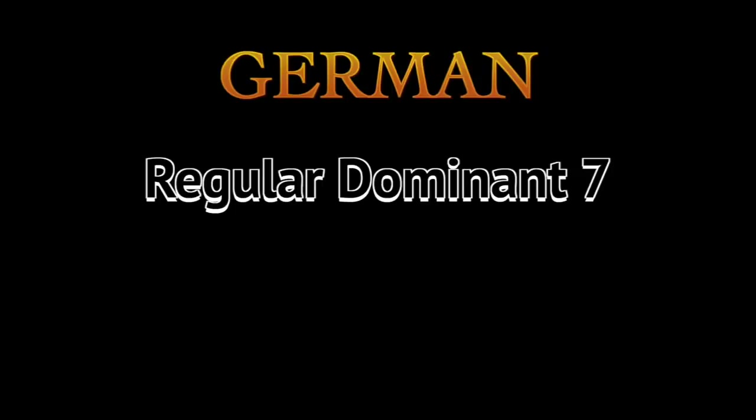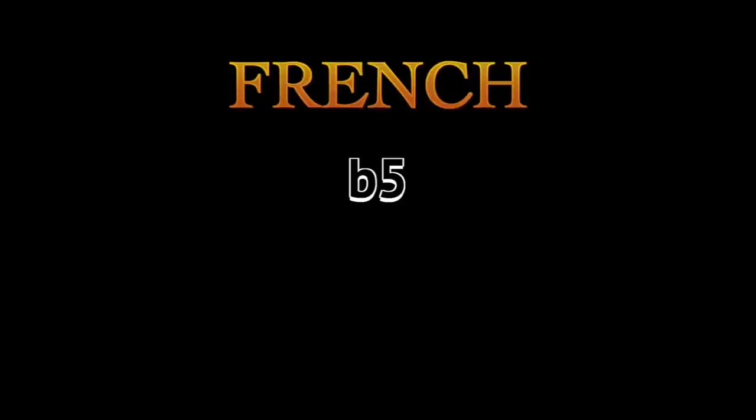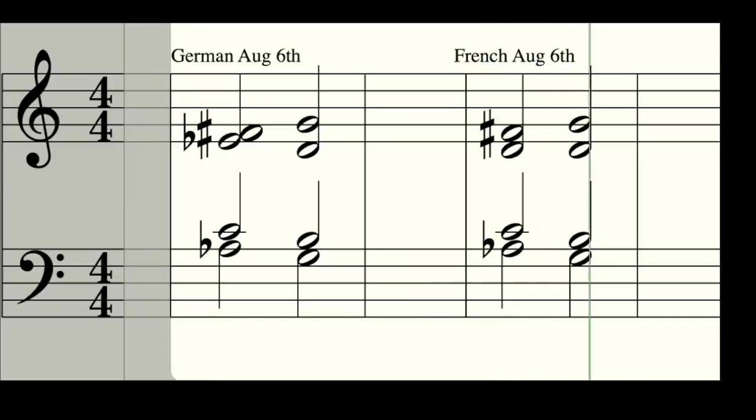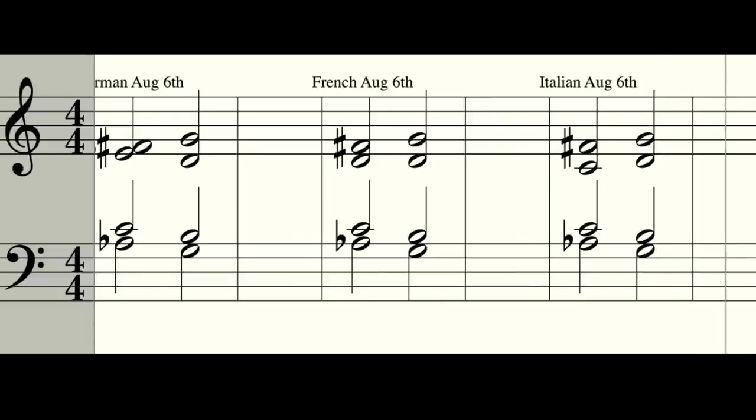There are three types of augmented sixth chords: the German, Italian, and French. The German is just a regular dominant seventh chord. The French has a flat five — very spicy. And the Italian has no fifth and usually a double third. All these options work great to create drama and suspense in your music.